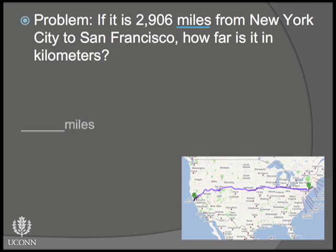Next, you have to find an endpoint. This will usually be given in the problem as the unit you are looking for. In this case, it is kilometers. The last part of the problem is what goes in between them. We may not know what goes there yet, but we can insert the framework now.